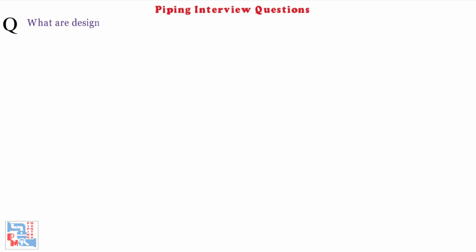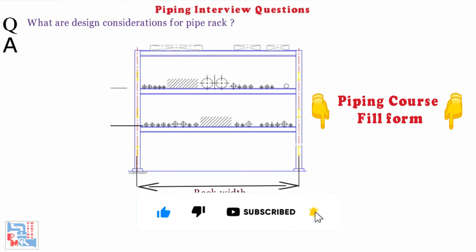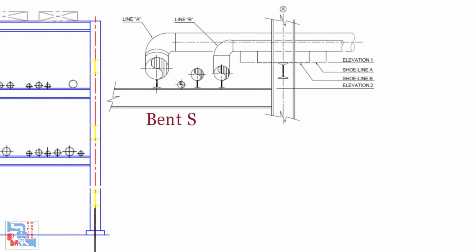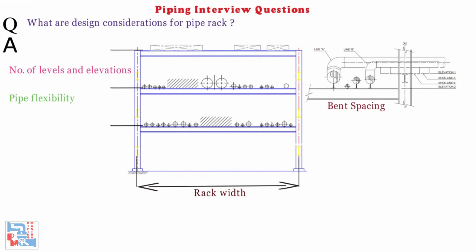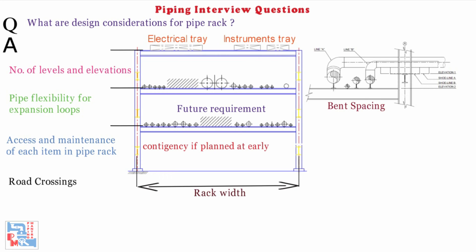Next: What are design considerations for the pipe rack? Rack width, number of levels and elevations, bend spacing to decide the clearance between two tiers, pipe flexibility to plan thermal expansion loops, access and maintenance of each item in pipe rack if any, road crossings. Also, consideration for electrical and instrument cable tray, future requirements and contingency if planning is at an early stage.